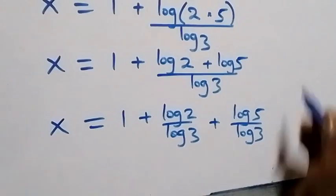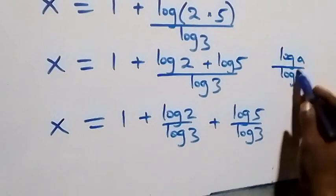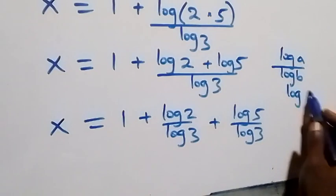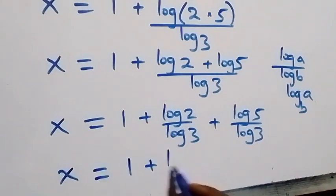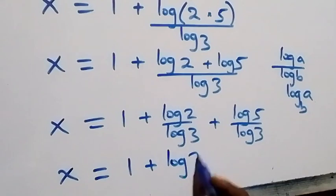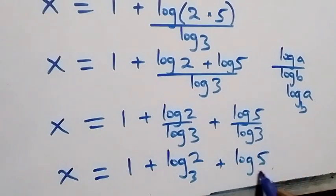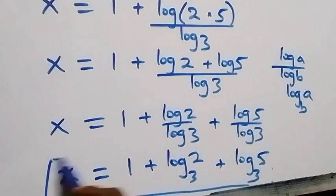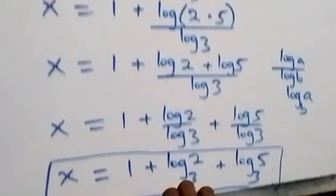Applying the change of base formula — when we have log a over log b, this can be written as log a to base b — what we have here becomes x equals 1 plus log 2 base 3, plus log 5 base 3. So the value of x in this problem is 1 plus log 2 base 3 plus log 5 base 3.